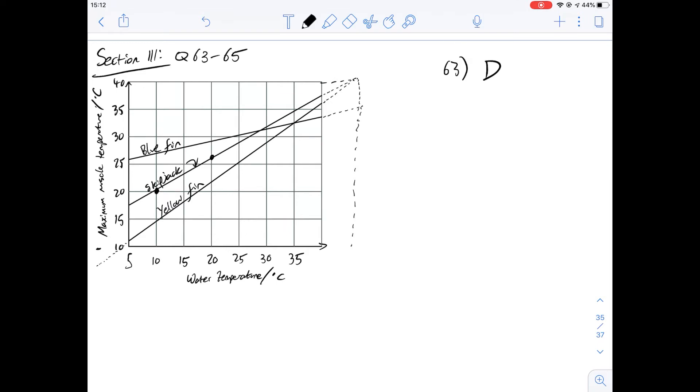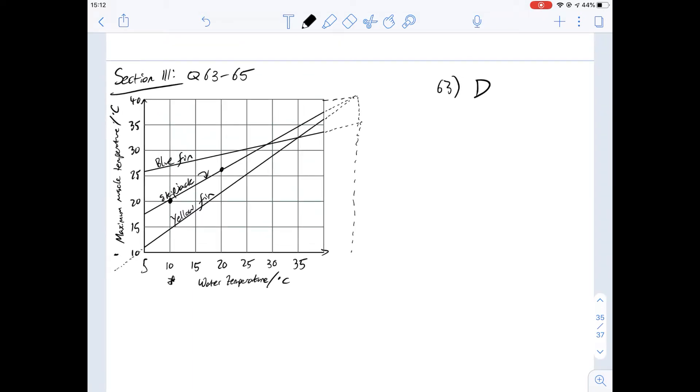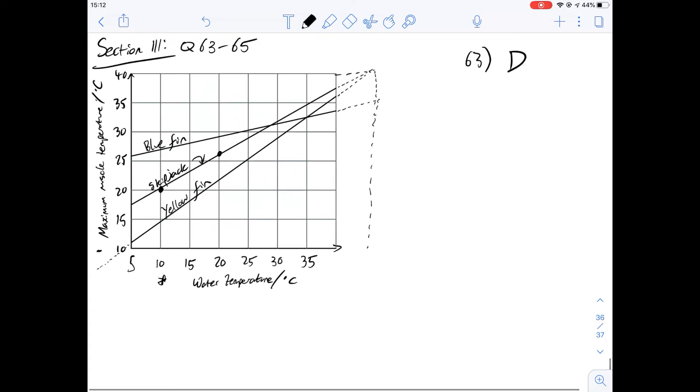Of course the temperature does increase but the difference between the maximum muscle temperature and the water temperature does decrease. So initially at the point we looked at here, the skipjack had a maximum muscle temperature that was 10 degrees C higher than that of the water temperature. Whereas when we have a look at this value here at 20 degrees C water, we can see that the difference between the maximum muscle temperature and the water temperature has decreased.